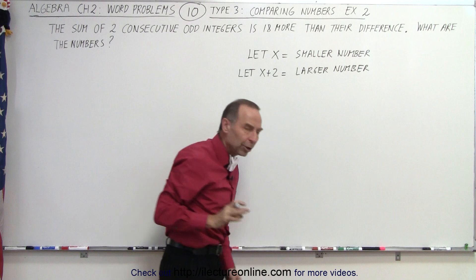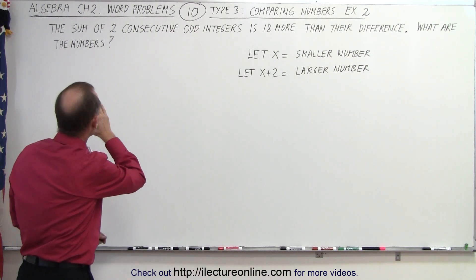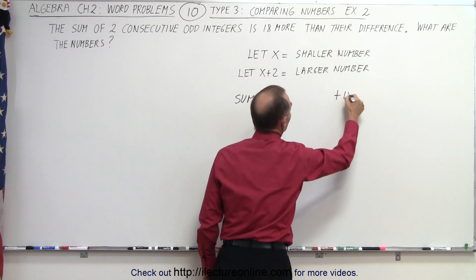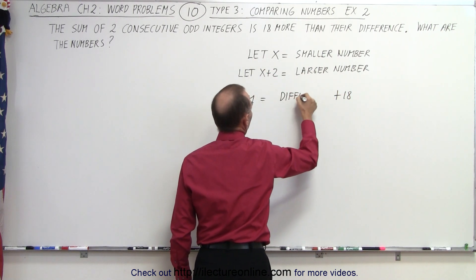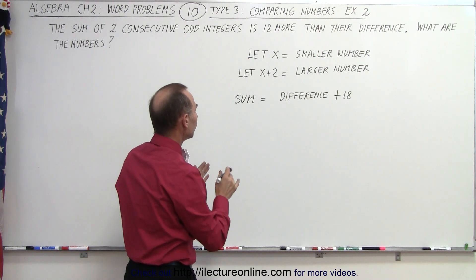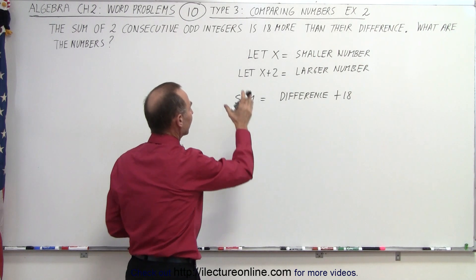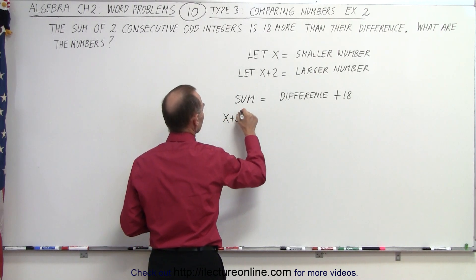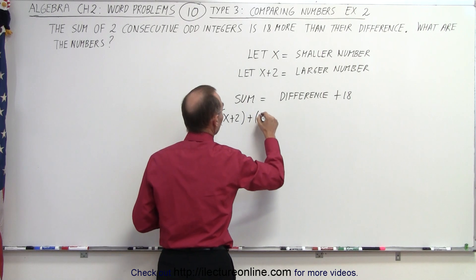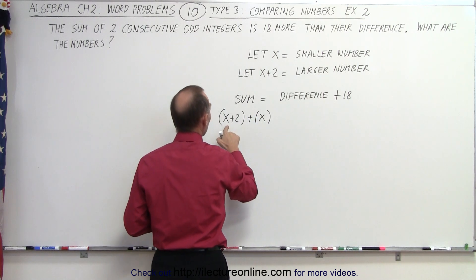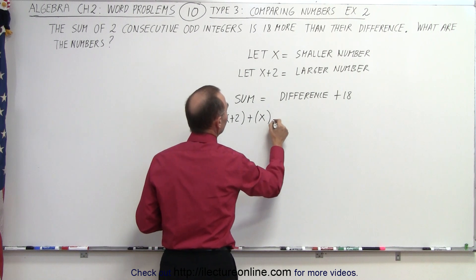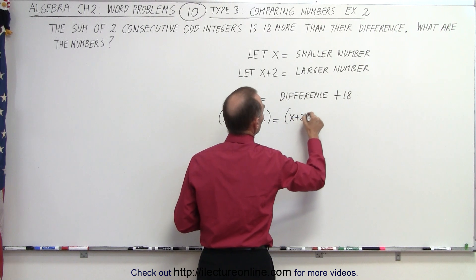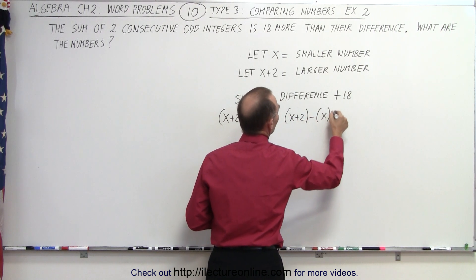Now we need to come up with an equation so we can solve for x. And we're told that the sum is equal to 18 more than the difference. So now we're able to write that in an equation format with the variable x. So the sum of the two numbers will be x plus 2 plus x. It's the smaller and the bigger number added together. It's equal to 18 more than the difference. So the difference would be x plus 2 minus x plus 18.